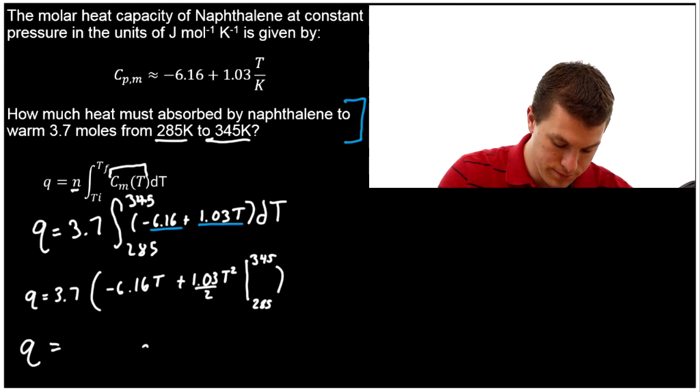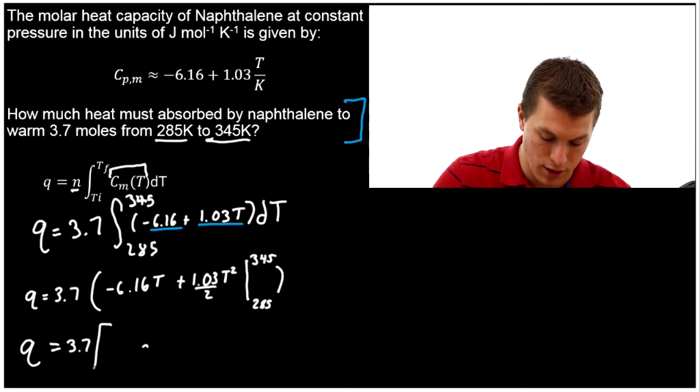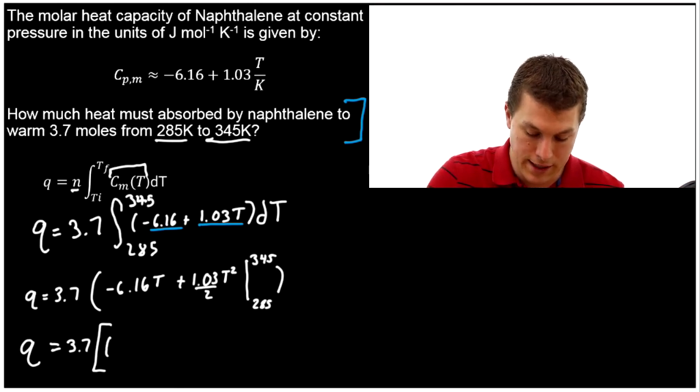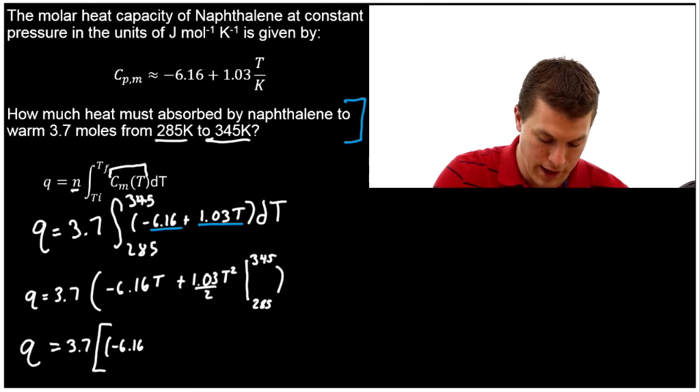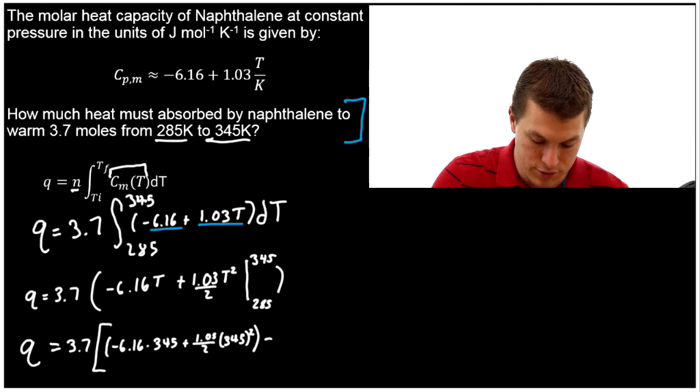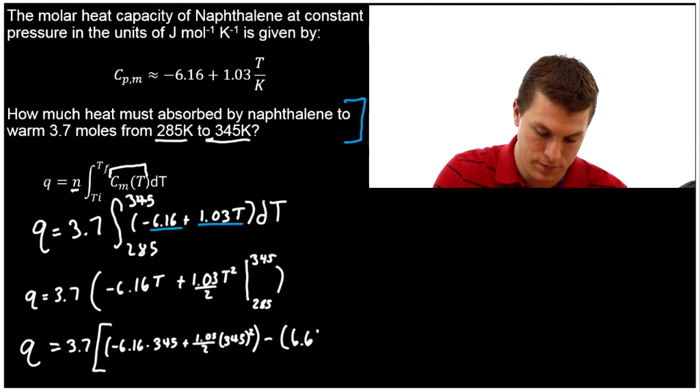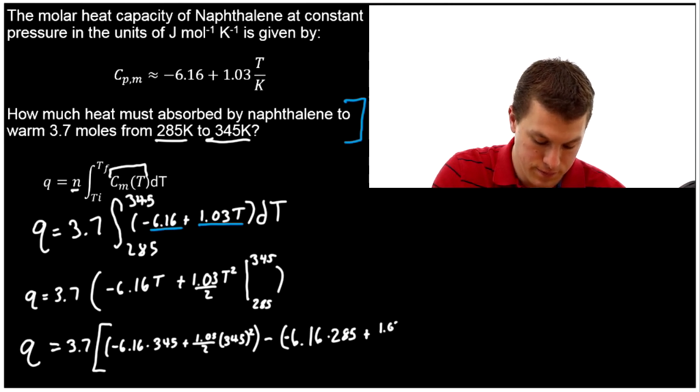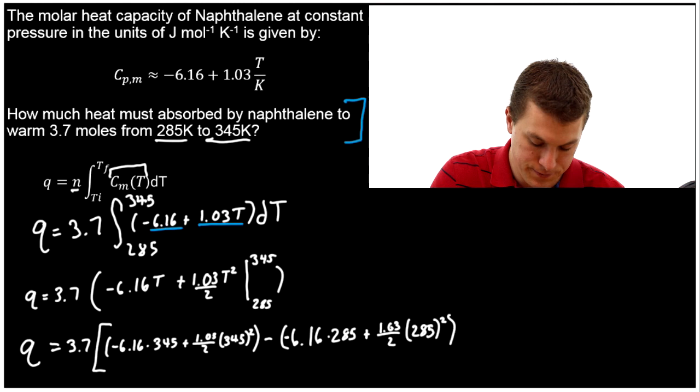Alright, let's go ahead and do that. So q = 3.7. And then I'm going to use brackets here. Here's basically the hardest part of these problems. The integration is not that hard, but it's easy to screw up your signs here. So pay careful attention. First we're going to plug in the top number: -6.16 times our top number, 345. And then we're going to add to that 1.03 over 2, and this guy's squared, 345 squared. Alright, that's our top bound. Now we're going to subtract from that, evaluating at our bottom bound: -6.16 times 285, and that's negative, plus 1.03 over 2, and now our T squared, 285 squared.